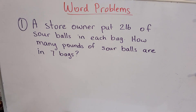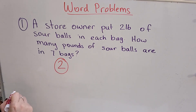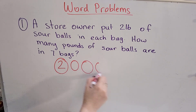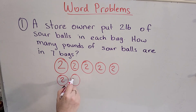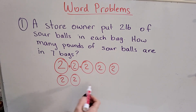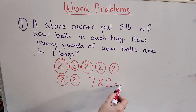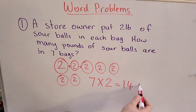Number 1. A store owner put 2 pounds of sour balls in each bag. How many pounds of sour balls are in 7 bags? The store owner puts 2 pounds in each bag — that's 1 bag, 2, 3, 4, 5, 6, 7 bags, with 2 pounds inside each. We're trying to find the total: 7 bags times 2 pounds each equals 14. So the answer is 14 pounds.